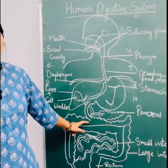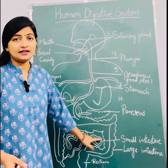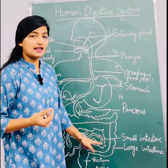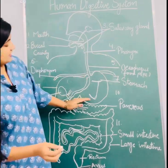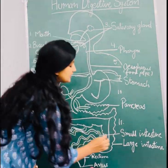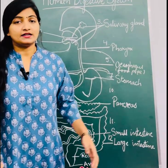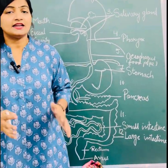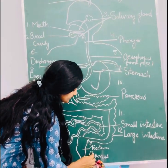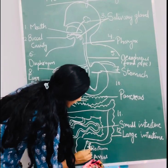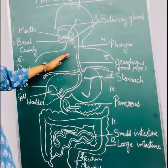The stomach is connected with the small intestine, which is thin in thickness but very large in size. Then comes the large intestine, which is thick but short in length. After the large intestine comes the rectum and then the anus.